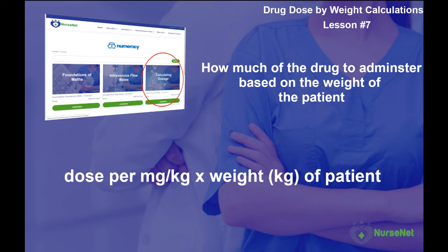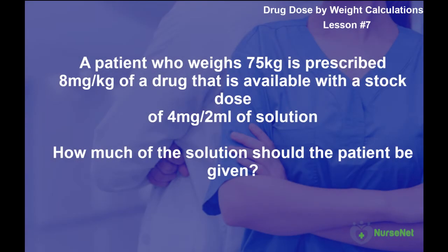Here's an example. A patient who weighs 75 kilograms is prescribed 8 milligrams per kilogram of a drug that is available with a stock dose of 4 milligrams in 2 millilitres of solution. How much of the solution should be given to the patient? Let's break this question down to identify how we might approach tackling it.